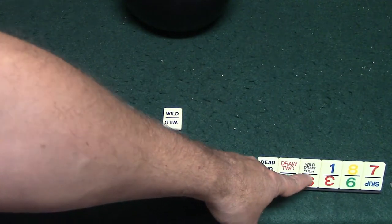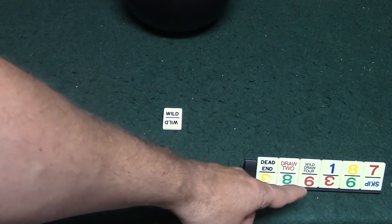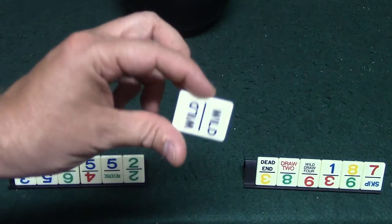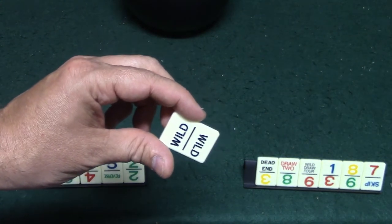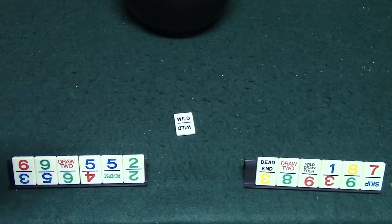If you get the wild draw four, whoever is next is going to have to draw four tiles and whoever played the wild draw four is going to get to choose a color. With the wild tile you'll be able to choose whatever color that you would like to try to help you get rid of some of your dominoes, and then skip over there will skip the next player.